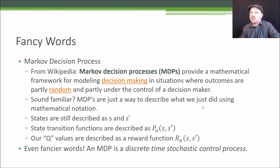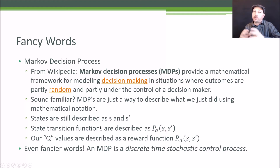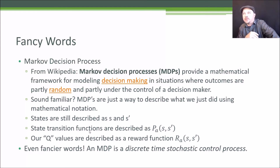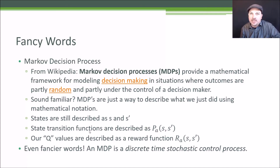The MDP notation is similar to what we've been using. States are still S, and S-prime is the next state encountered. We have state transition functions defined as P sub A for a given state S and S-prime. Our Q values are represented as a reward function: R sub A for a given S and S-prime — moving from one state to another has a given reward associated with it. You can also call a Markov decision process by another name: a discrete time stochastic control process. It sounds incredibly complex, but it's the same concept we just described.